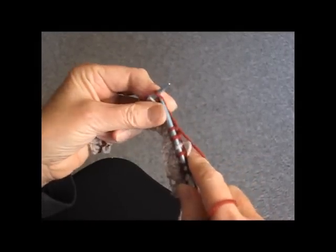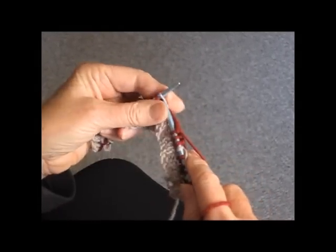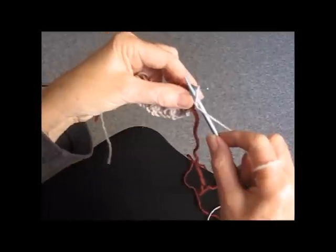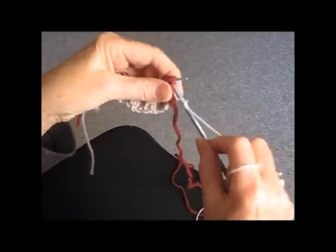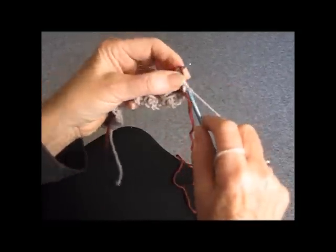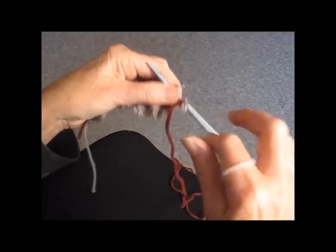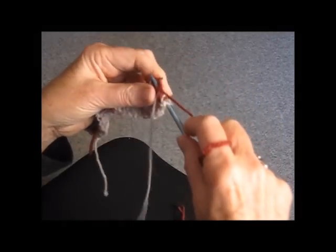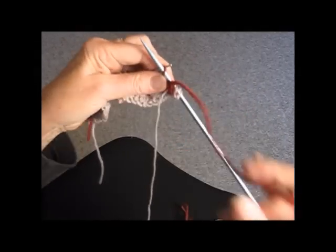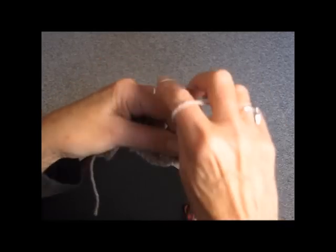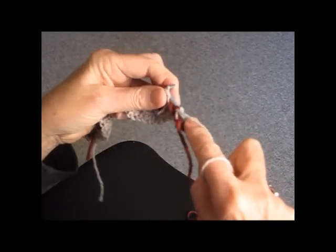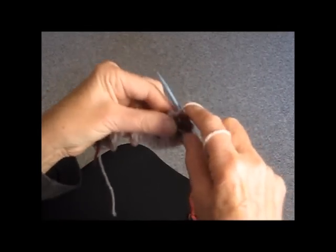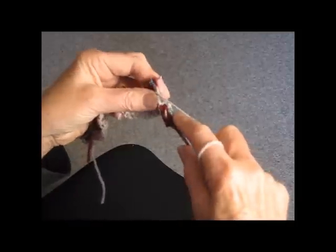And then when we turn around, we're going to do something different. So on the purl row, we're going to start by doing two of the main color, one red, that middle red stitch, and then three of the main color tan: one, two, three.